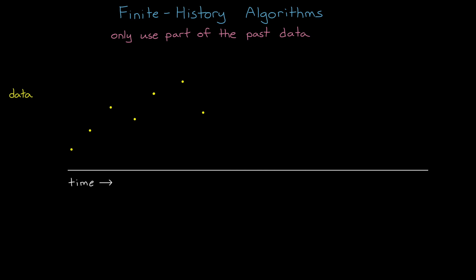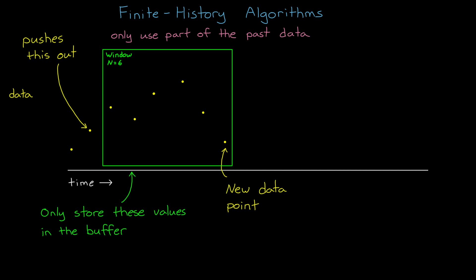So instead, we just store a fixed number of past data points in a buffer. We would store both the input and output data and anything that's needed to identify a model. When a new data point comes in, it just pushes out the old one so that the window is always the same length.